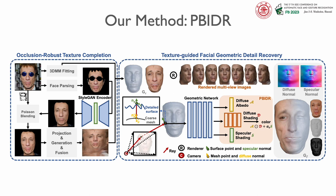Furthermore, we propose a registration loss to predict the signed distance between the implicit zero-level set and the coarse mesh. In this way, geometric details are explicitly transferred back to the coarse 3DMM topology.